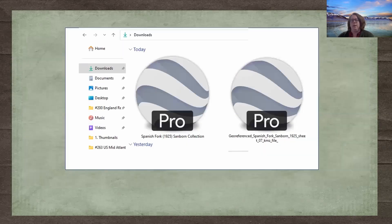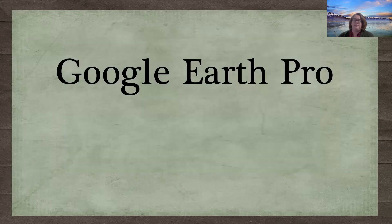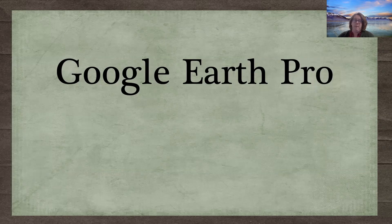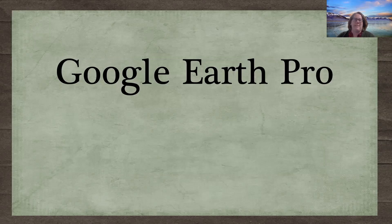If you have Google Earth installed on your desktop, the downloaded files appear in your download section. Google Earth Pro is the Google map desktop application and can be downloaded and used freely. I believe it's being revised and may be obsolete in about 18 to 24 months when Google rolls it into a new online version of Google Maps. Now I'm going to stop sharing and open up my Google Earth so we can play with it for a minute.